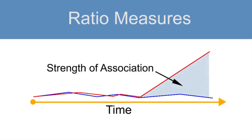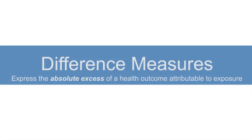The ratio measures indicate the relative strength of the association between the exposure and a disease or health outcome compared with the absence of exposure. This strength of association is of greater interest when we are trying to understand causes of a disease. In contrast, difference measures — sometimes called attributable risk measures — place the magnitude of the association in a public health perspective, telling us whether the exposure is associated with a large or small number of disease cases.